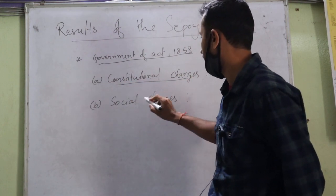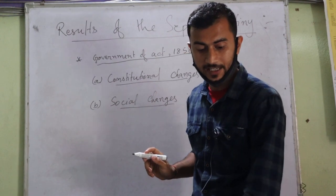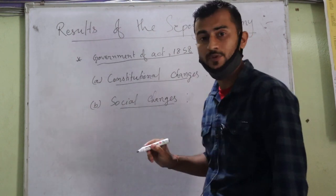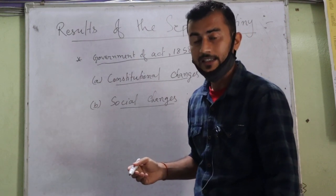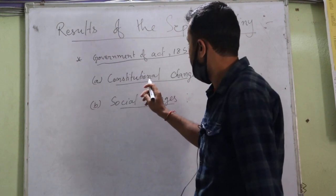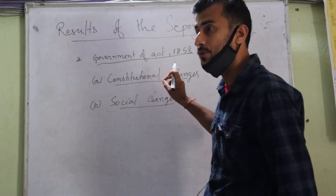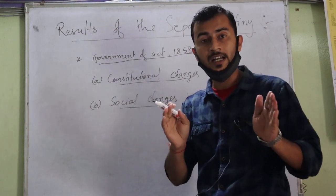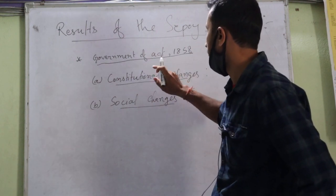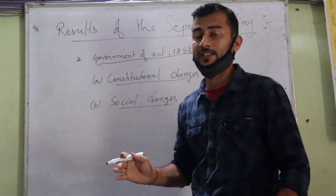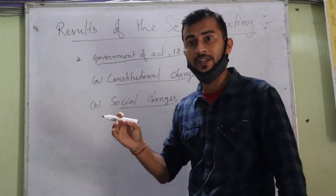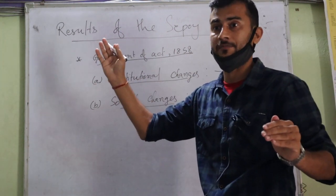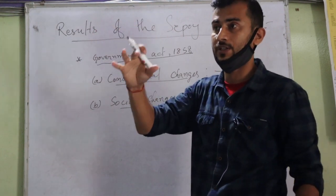Through this act, constitutional changes and social changes were introduced. Under the constitutional changes, the British government withdrew the East India Company's rule from India. The East India Company had begun ruling from 1757 after the Battle of Plassey. After about 100 years, the East India Company's rule was withdrawn and the British king or queen directly started to govern India.